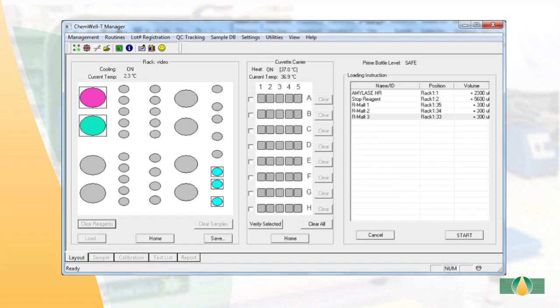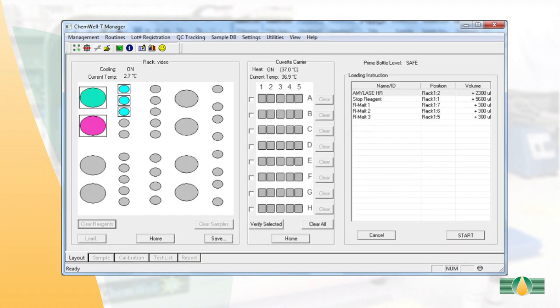The layout tab will automatically open. This represents the layout of the reagent and sample racks and the plate. Positions of the reagents and samples can be modified as required.